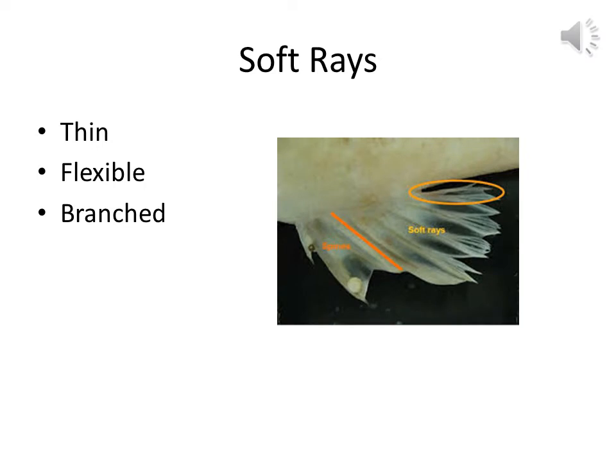The above described types are the chief types of fin rays encountered. The first type is soft rays. Soft rays are often very thin, flexible, and most often branched. You can see in the picture — the soft rays are presented here.